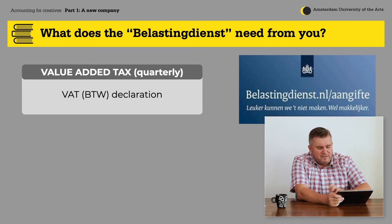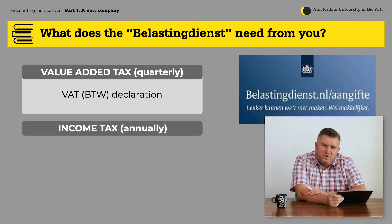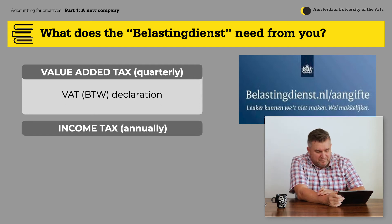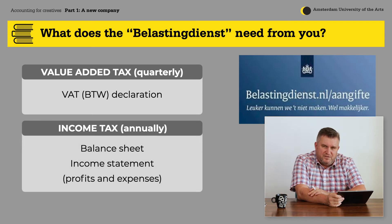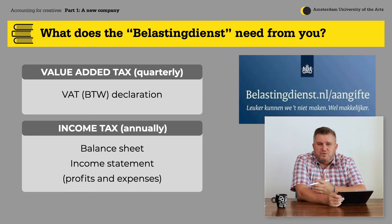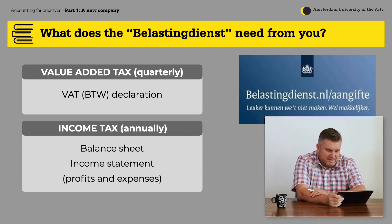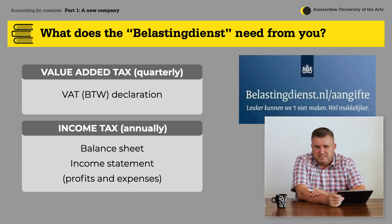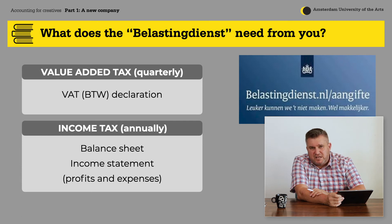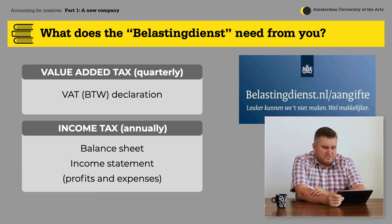At the end of the year, the tax authorities want to know what you earned, because you have to pay income tax over your profit. So at the end you will need to make two reports. The first is a balance sheet, which tells what you own. The second is an income statement — also called a profit and expenses report — which tells how much you earned this year. This last one is what you pay taxes over, so it's a very important report.